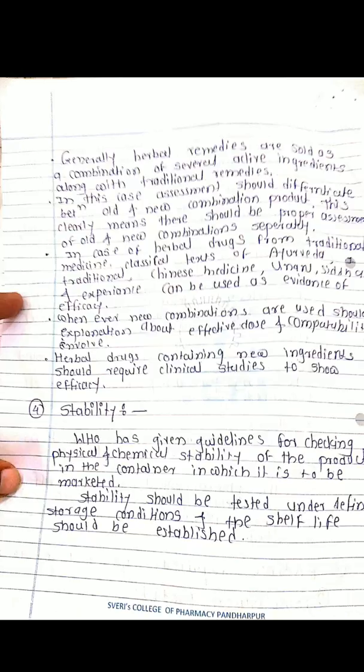For herbal drugs from traditional medicine systems such as Ayurveda, Traditional Chinese Medicine, Unani, or Siddha, experience can be used as evidence of efficacy. Whenever new combinations are used, an explanation of effective dose and compatibility must be provided. Herbal drugs containing new ingredients should require clinical studies to demonstrate efficacy.